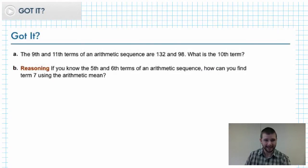And your chance to show that you have got it. Part A: The 9th and 11th terms of an arithmetic sequence are 132 and 98. What is the 10th term? And part B, a reasoning question: If you know the 5th and 6th terms of an arithmetic sequence, how can you find term 7 using the arithmetic mean?